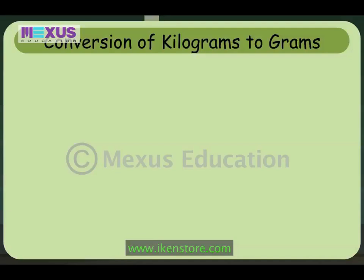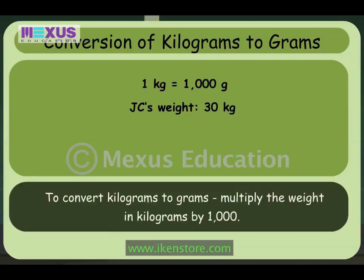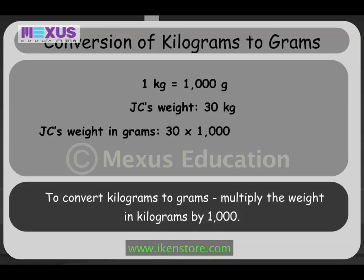So, like I just told you, 1 kilogram is equal to 1,000 grams, and I weigh 30 kilograms. So to find out your weight in grams, we will multiply your weight in kilograms by 1,000. That's 30 multiplied by 1,000. Exactly! So your weight is 30,000 grams. Wow, that is a big number!